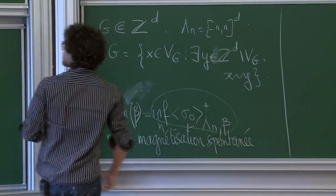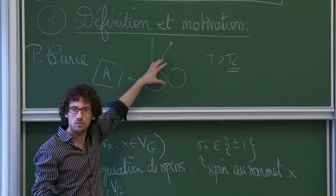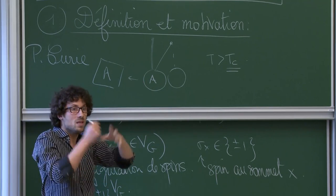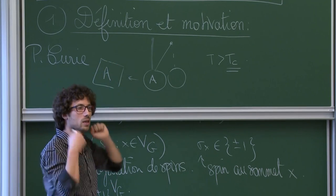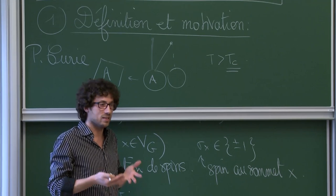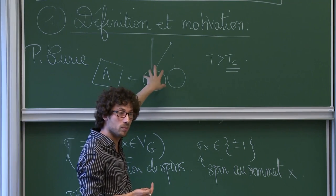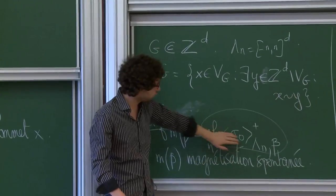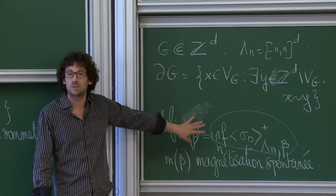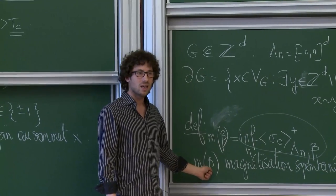En reprenant l'expérience de Curie : les spins sur le bord sont forcés d'être +. La question est de savoir si, en moyenne, une majorité stricte des atomes à l'intérieur pointent vers + ou non. Ce phénomène correspond exactement à la question : est-ce que la magnétisation spontanée m(β) est strictement positive ou nulle ? La réponse dépend de la température.